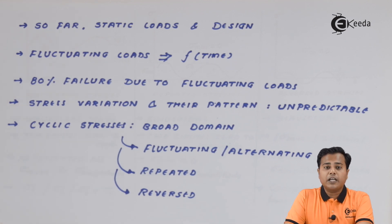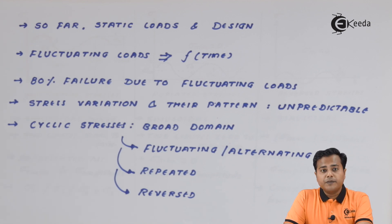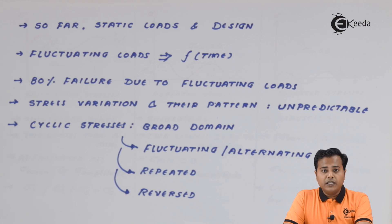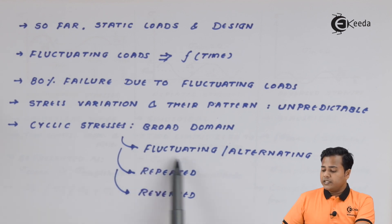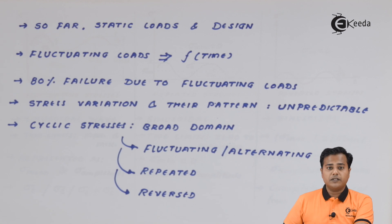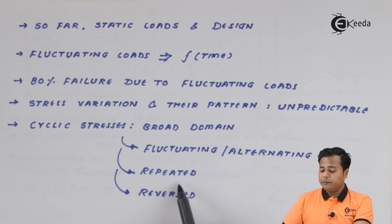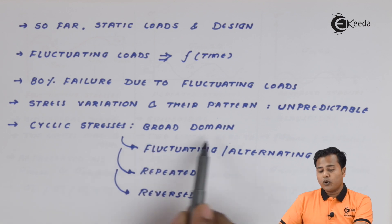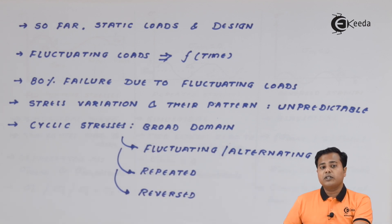All these stresses can be categorized under one category called cyclic loading. They are called cyclic because they may come back in the same or different pattern, they may repeat or reverse themselves, or exhibit similar behavior after equal intervals of time. Three such cyclic loadings are considered: fluctuating or alternating load, repeated load, and reversed load. Accordingly, stresses are also categorized as fluctuating, repeated, and reversed stresses. Cyclic stress is the broad domain, and these three are its subtypes.